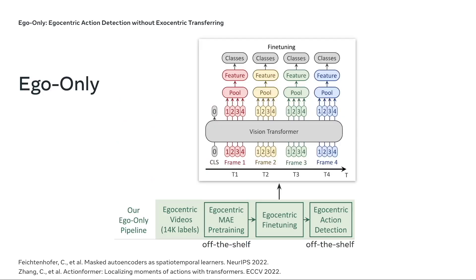Our EgoOnly method has three stages. First, we simply take an off-the-shelf video MAE algorithm and retrain on egocentric data. Next, the model is fine-tuned with a temporal segmentation objective, which is simply per-frame classification with spatially pooled features. Finally, any existing action detector can be applied on top of the frozen features to produce temporal segments. In this way, we don't depend on exocentric transferring anymore but can train our egocentric detector effectively.